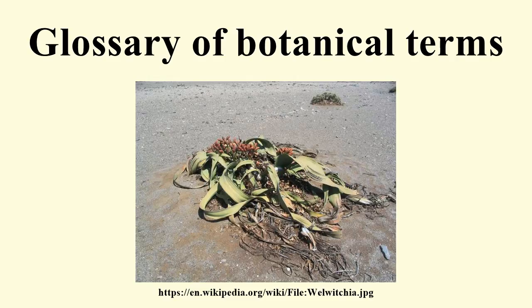Acaulescent: an adjective descriptive of a plant that has no apparent stem, or at least none visible above ground. Examples include some species of agave, oxalis, and atali. Accrescent: increasing in size with age, such as a calyx that continues to grow after the corolla has fallen, for example in Physalis peruviana.